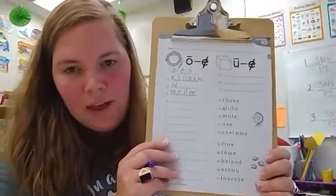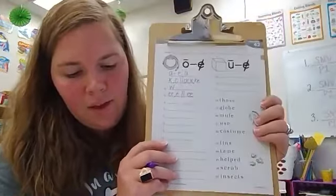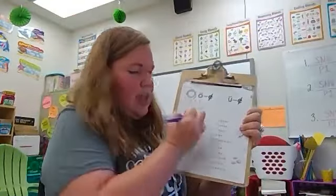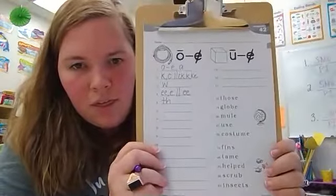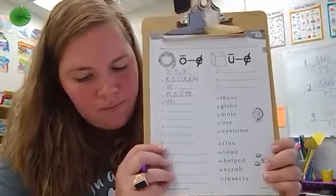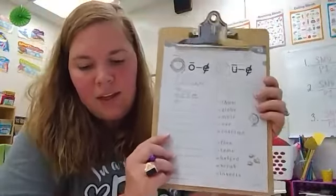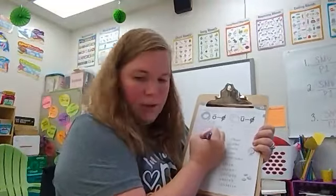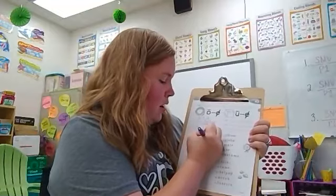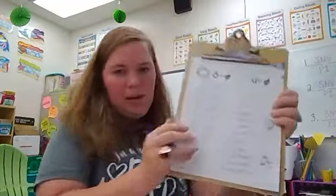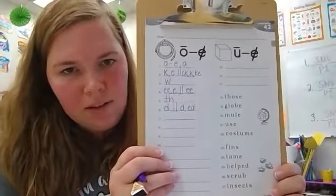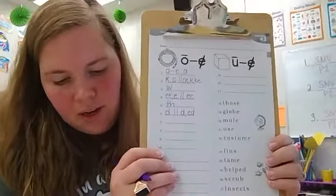Number five is TH. That is the digraph TH. Number six is D. That can be D or final D-E.